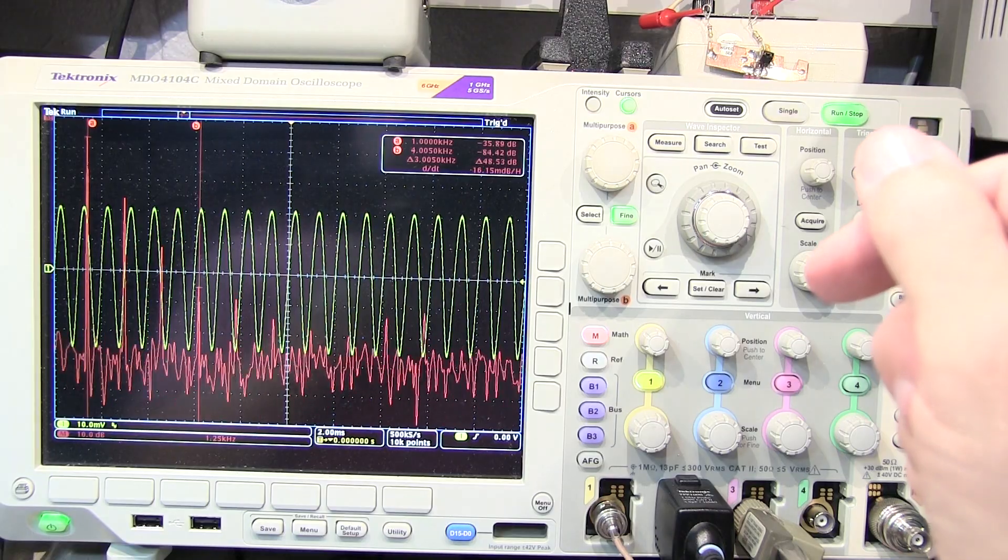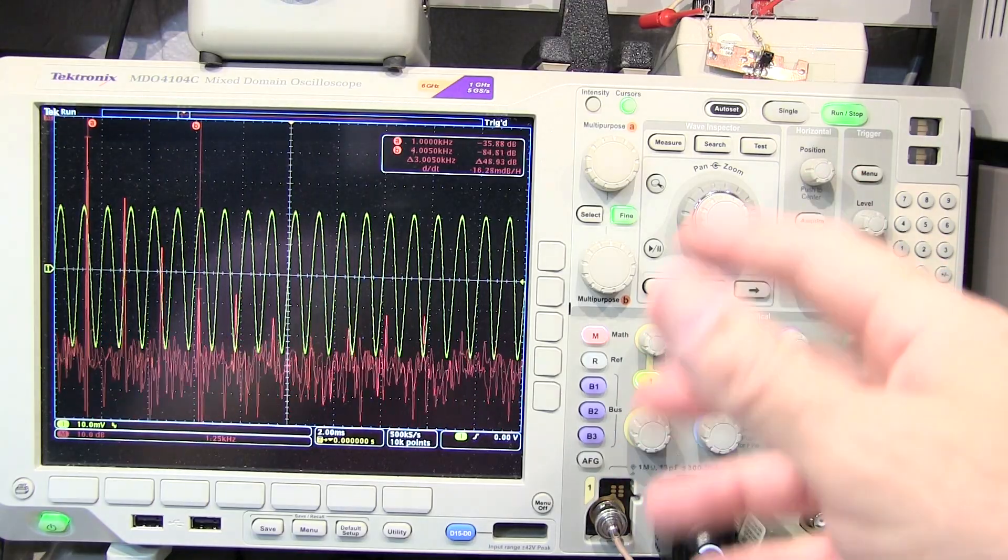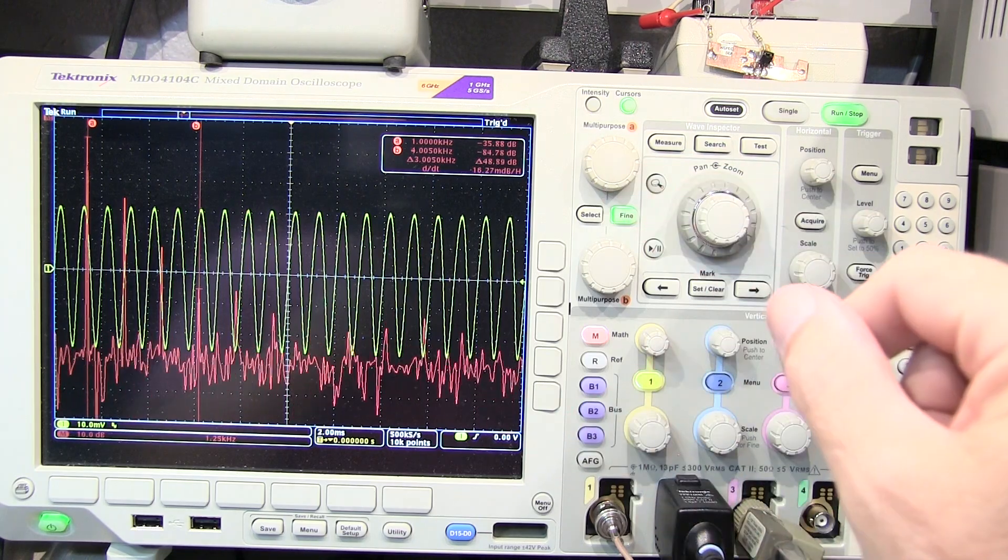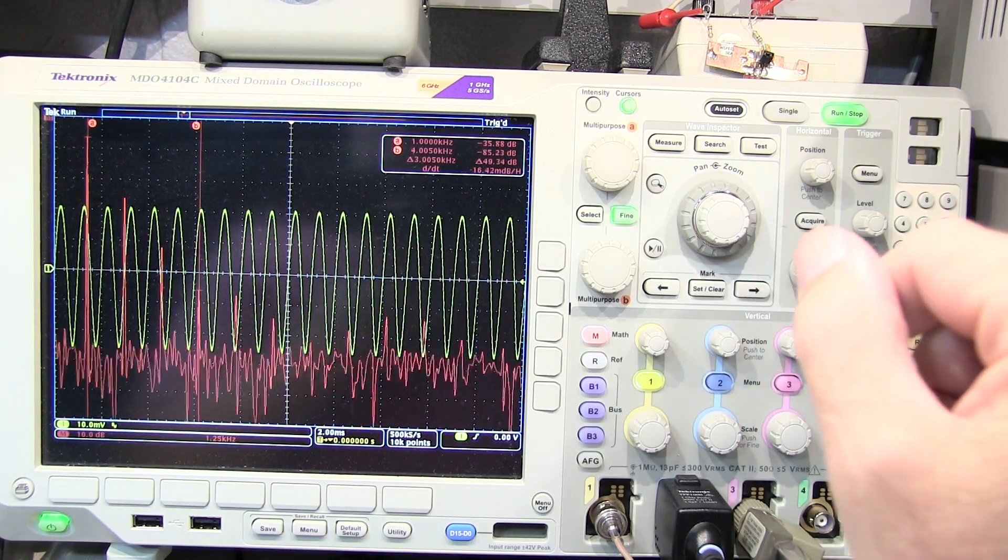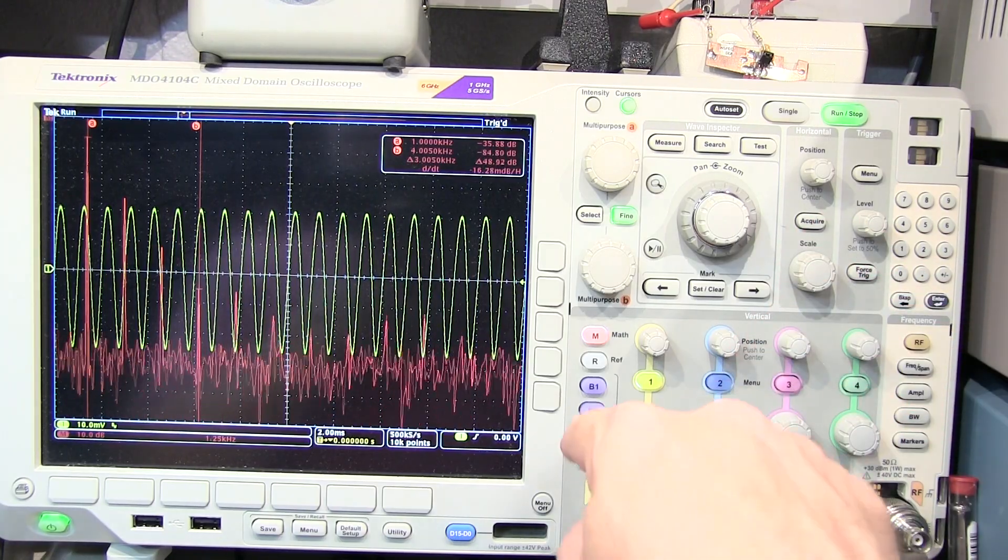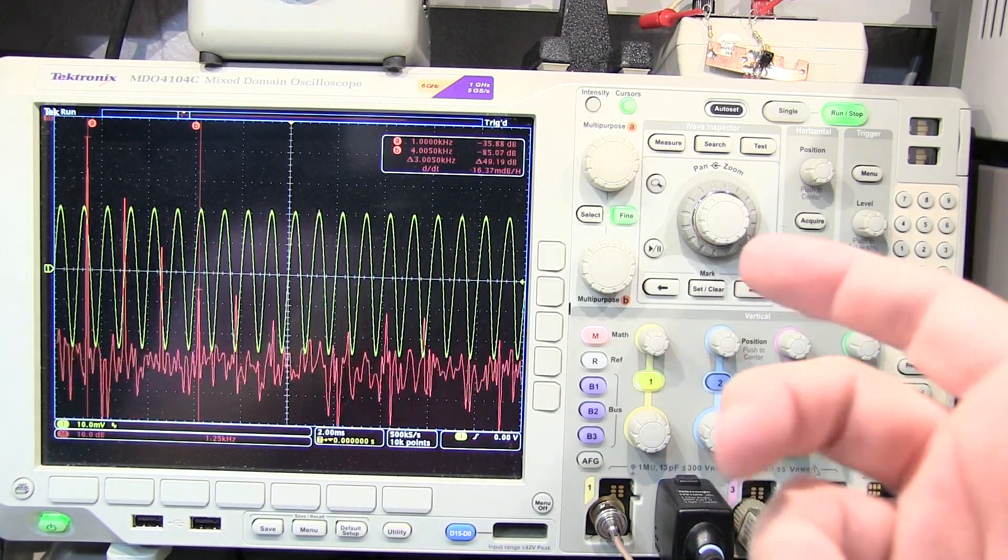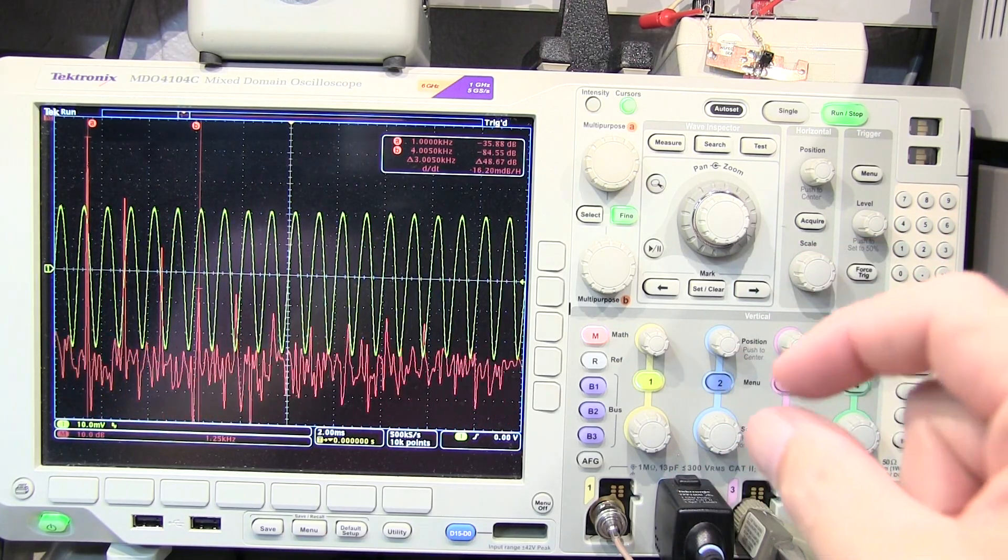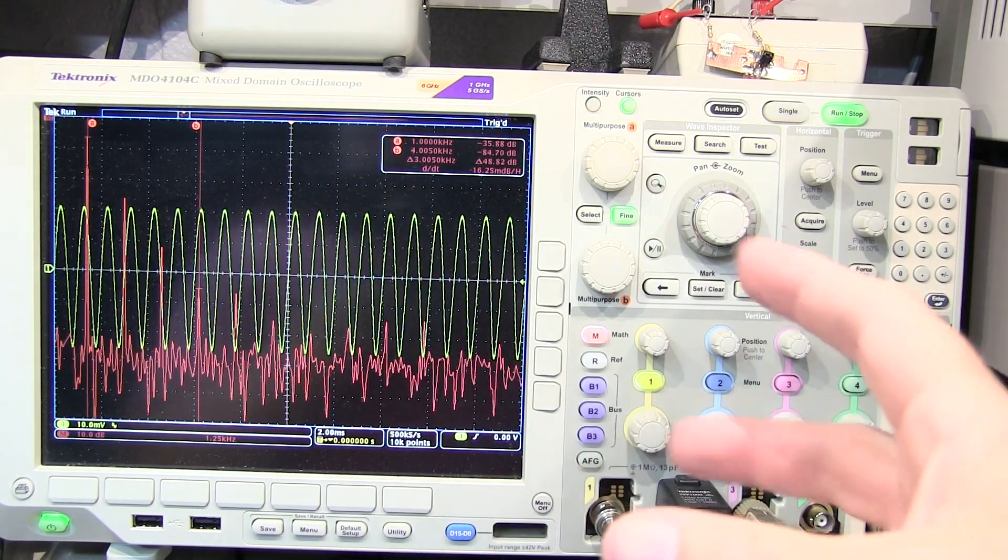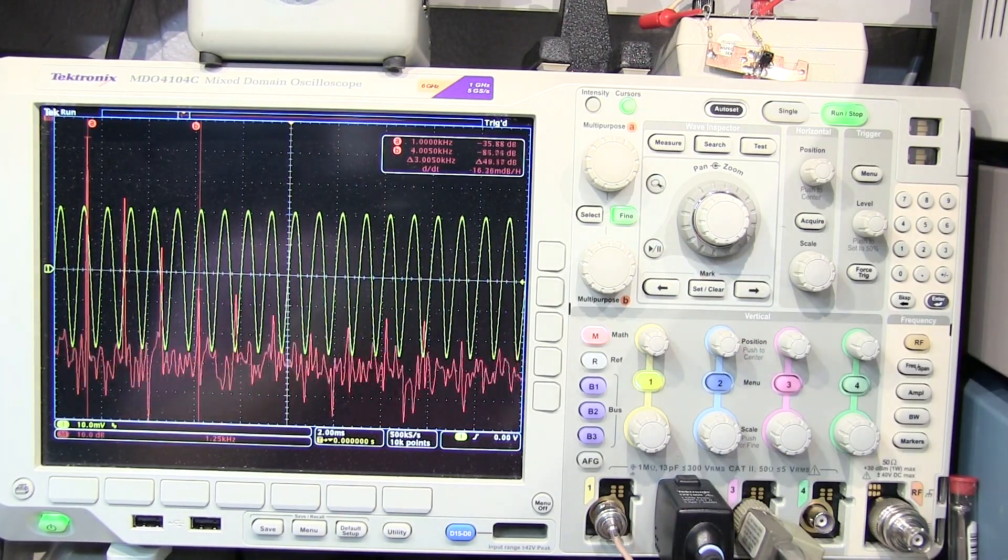But if you're looking to try to characterize the THD of something that is well under one percent or 0.1%, you're likely not going to have enough resolution in the scope to give you repeatable and acceptable results. Because what you're likely will be measuring is the THD of the scope itself and not of your circuit. So if you need to measure THD at very low levels like that, then you're better off with something like a THD multimeter or a more precision analyzer that's designed specifically for measuring THD.